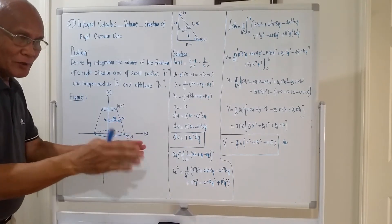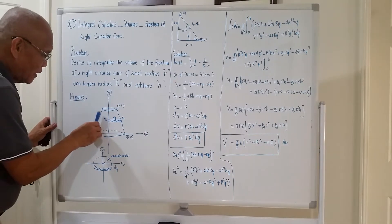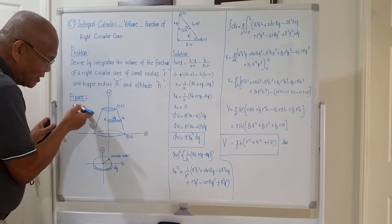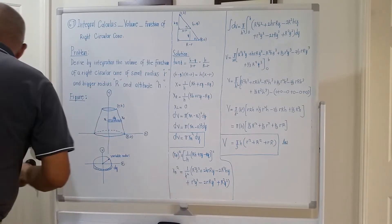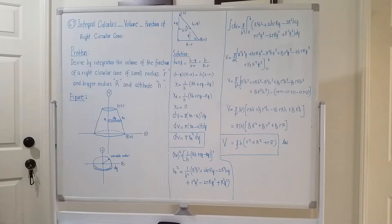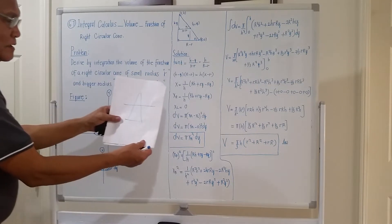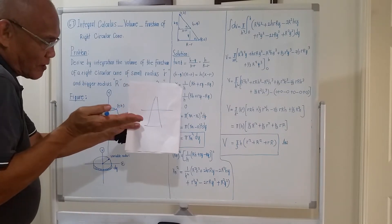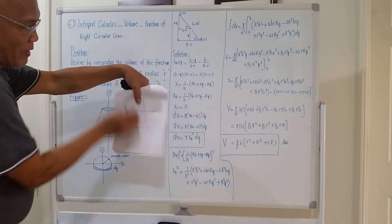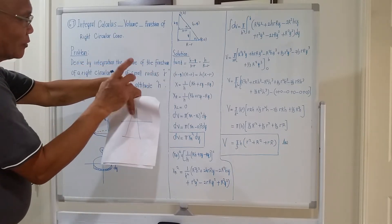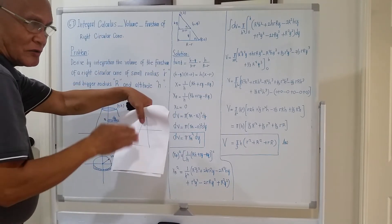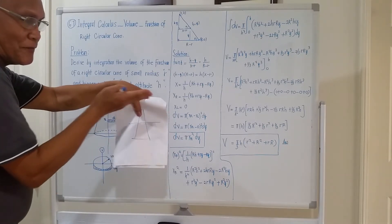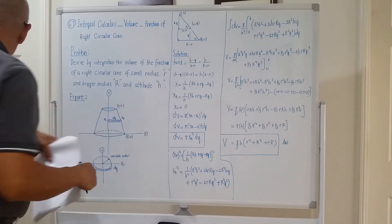The figure is a frustum of a right circular cone. It actually emanates from a cone, but something was cut at a certain portion at the top. When you cut some part at the top portion of a cone, what will remain will be a frustum. That's why I told you frustum of a right circular cone — it's originally a right circular cone, but we cut it at some portion at the top, so what will come out is a frustum.